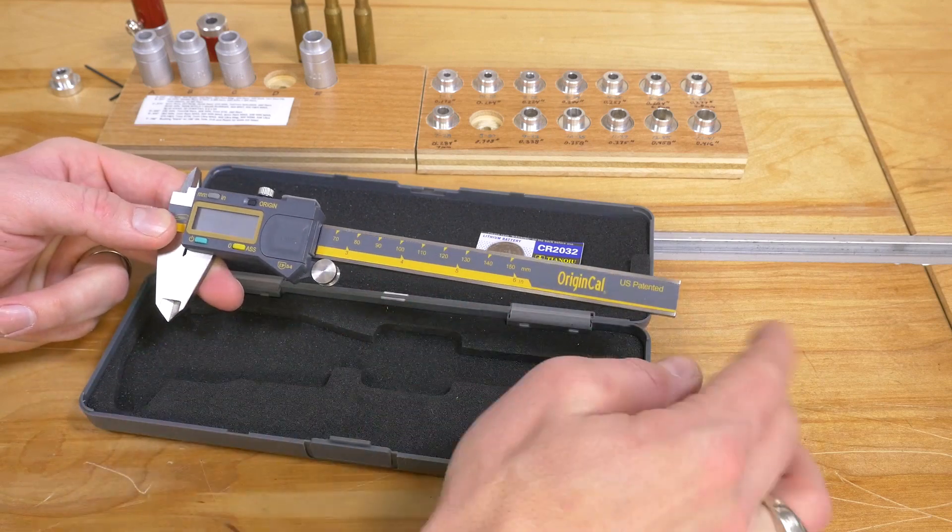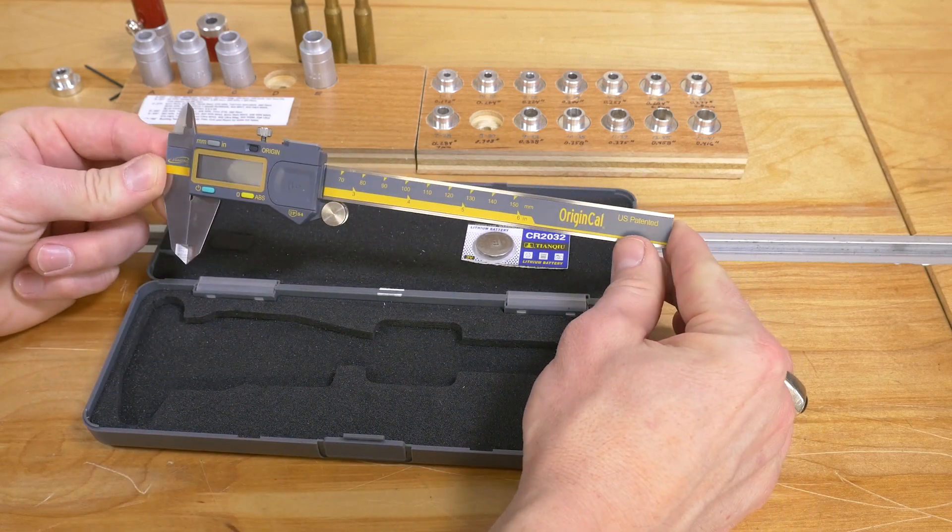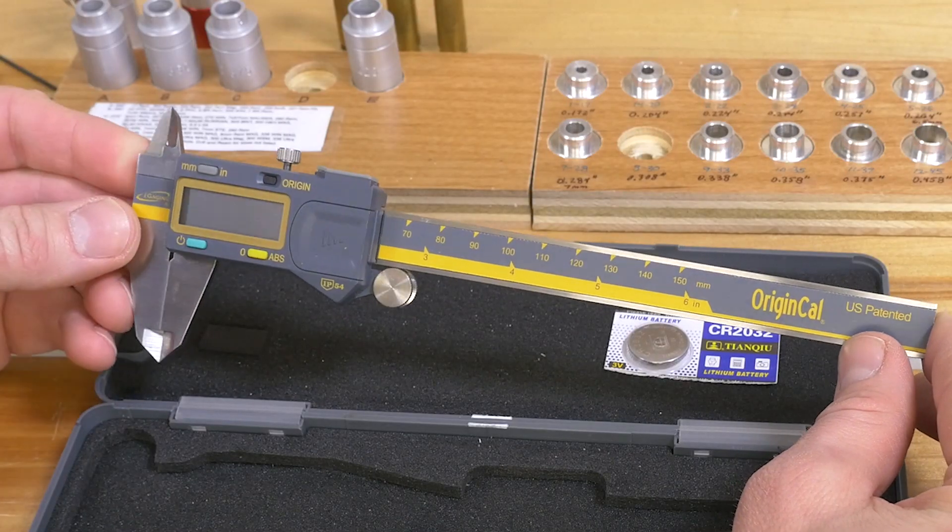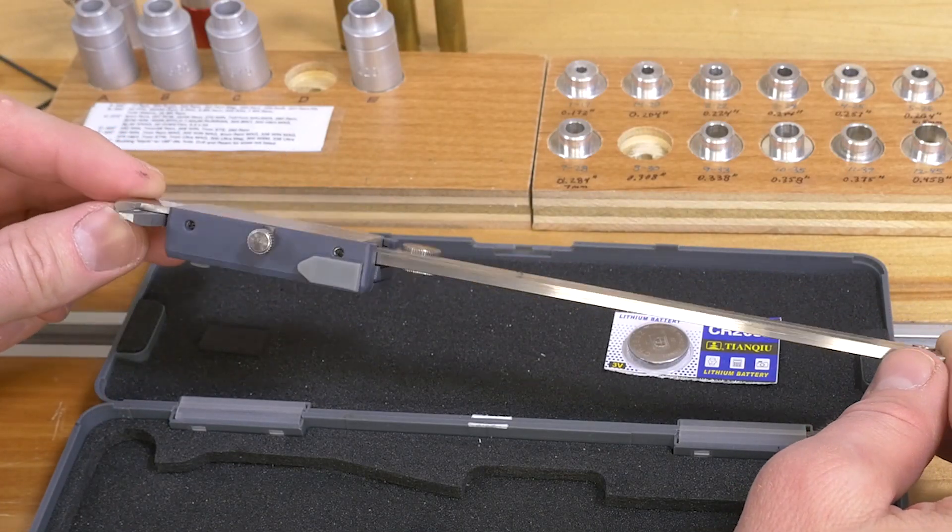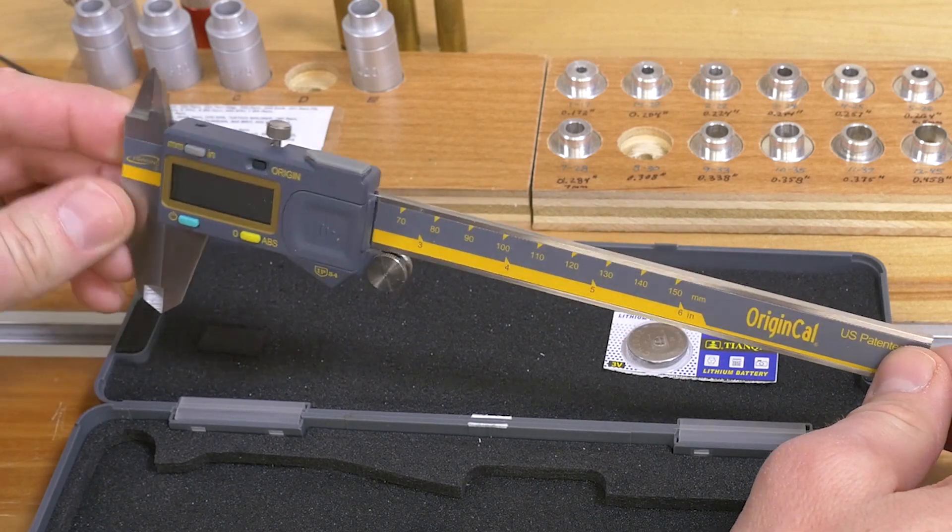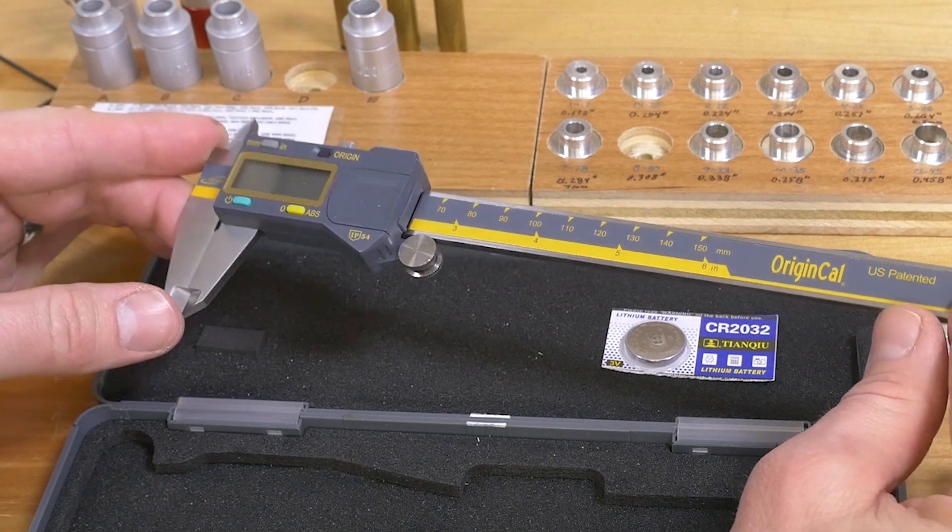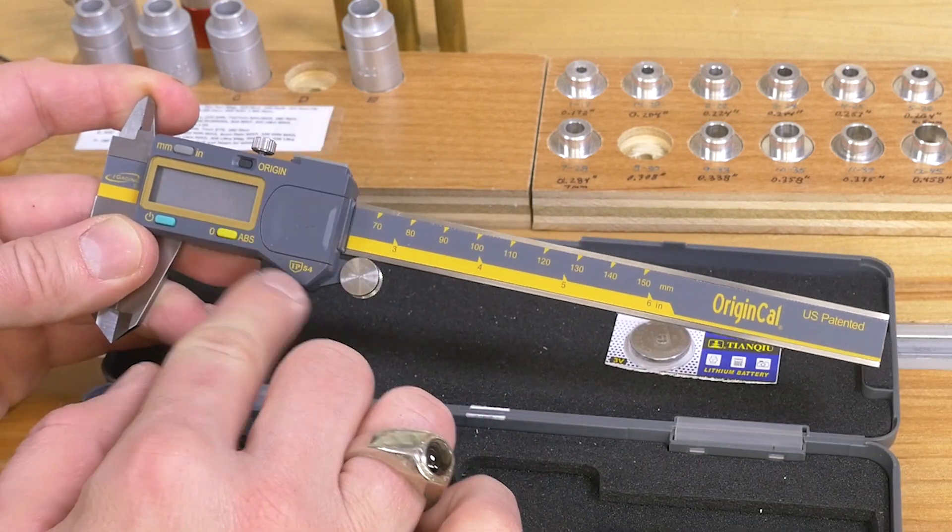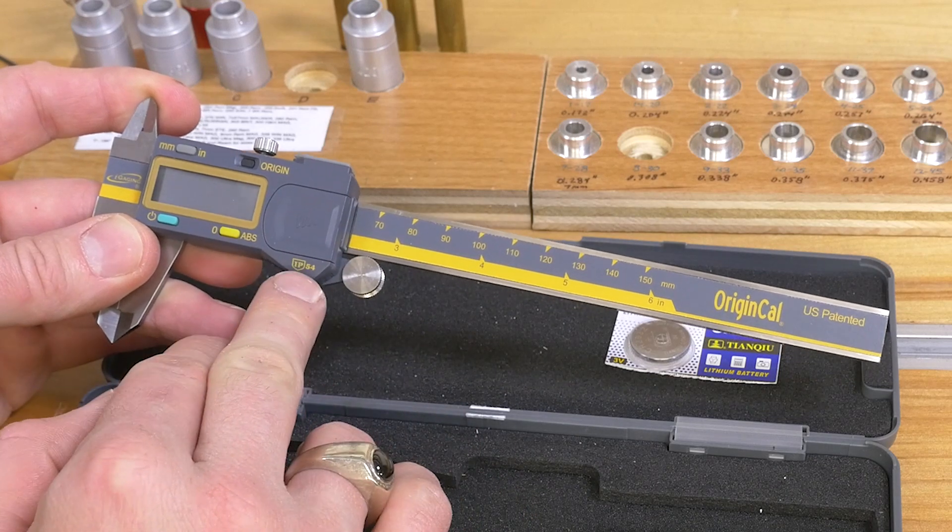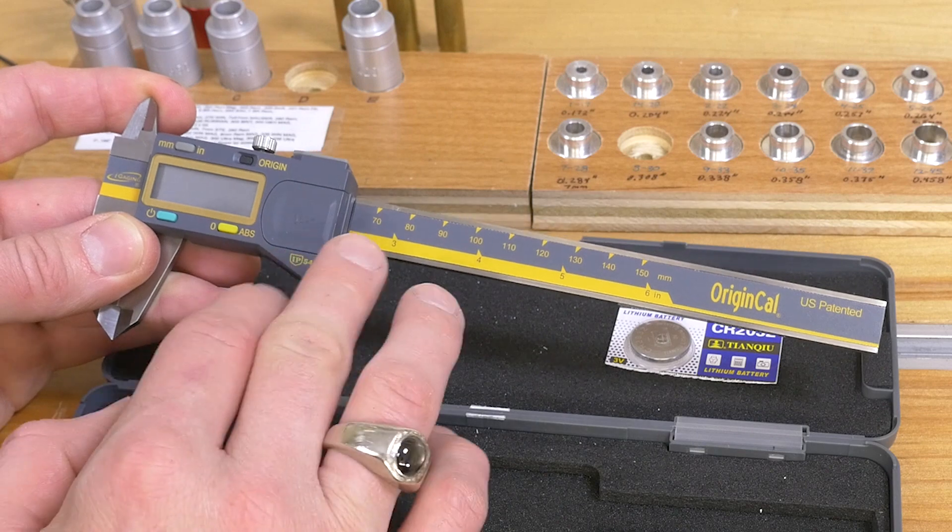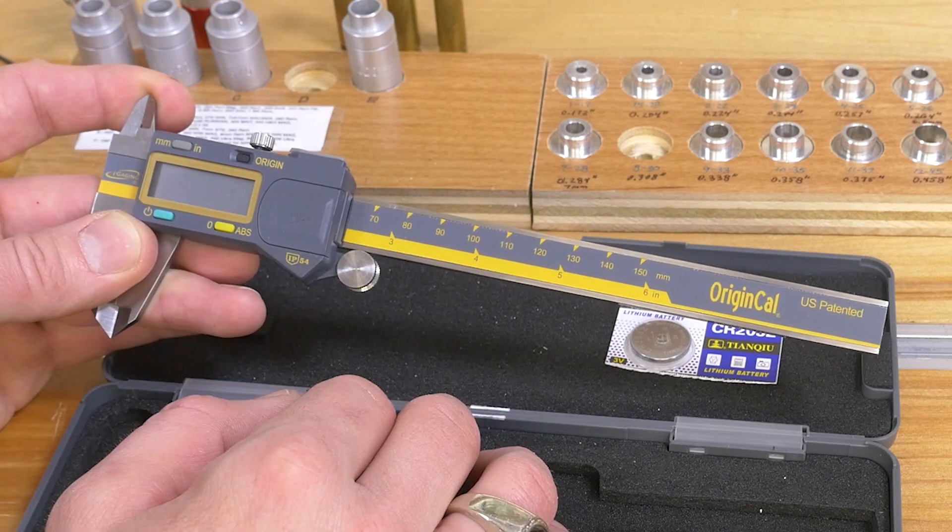So let's take a quick tour of the calipers themselves. These are very similar to something like Mitutoyo Digimatic, which are made in Japan. These are made in China, like I said, but they're made to a high quality standard. We've got a nice battery door here that has a rubber gasket inside, IP54 certified, so it's going to have a good degree of fluid and dust resistance.